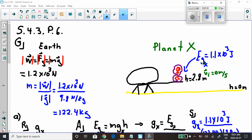We're told that the gravitational potential energy of this astronaut on Planet X, so it's EG subscript X. Gravitational potential energy on Planet X, we're told, is 1.1 times 10 to the 3 joules. That is what we are told.